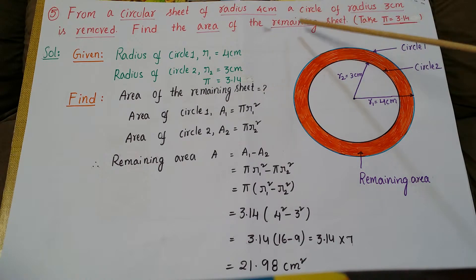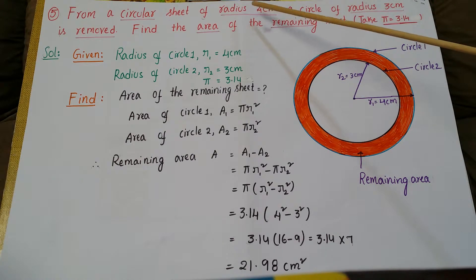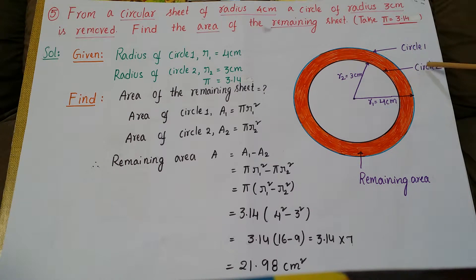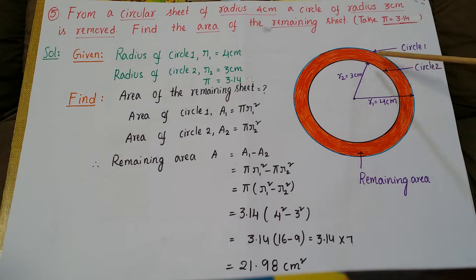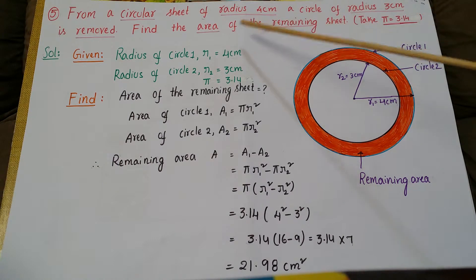Underline what value they have asked — area of the remaining sheet — and also underline pi equal to 3.14. First, draw the figure. The first circle, Circle 1, has radius r1 equal to 4 centimetres. The second circle, Circle 2, has radius r2 equal to 3 centimetres.